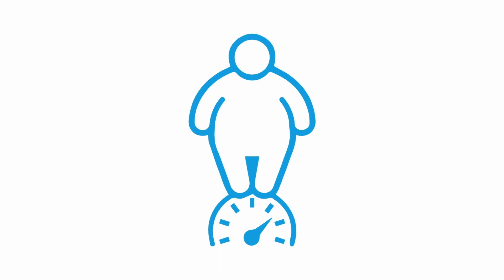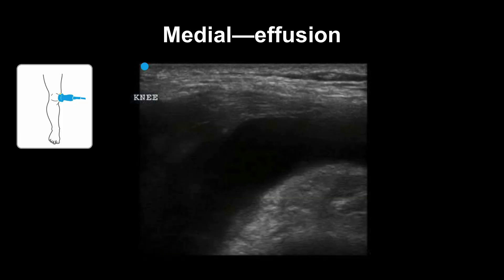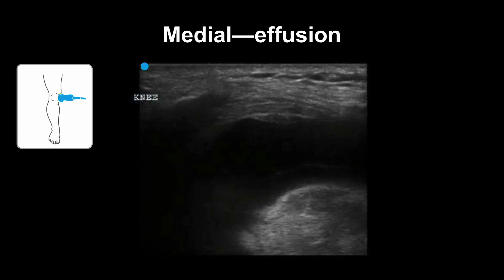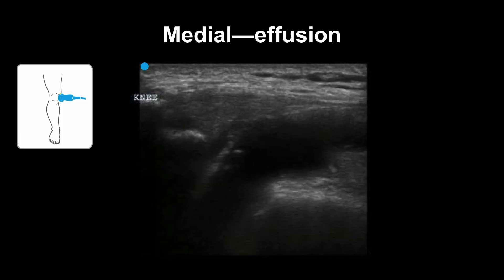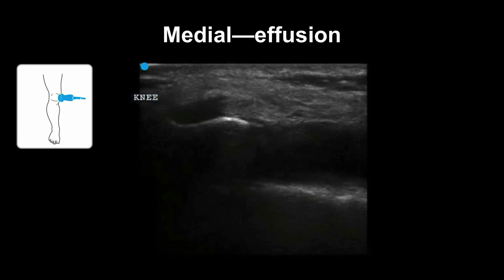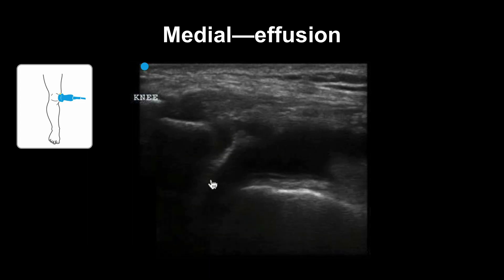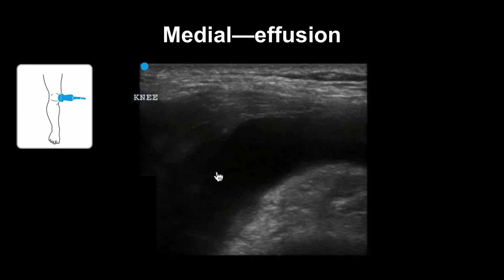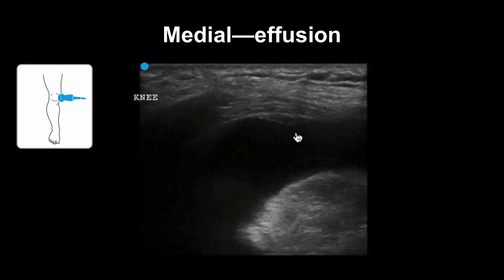How do you decide where to go when there's no landmarks? You can use ultrasound to find the biggest pocket of fluid. Here is an example of an effusion from the medial approach. The fluid appears hypoechoic and without any edges — it's just filling this space here.